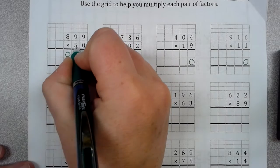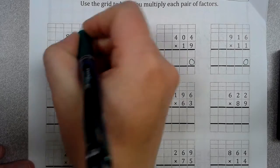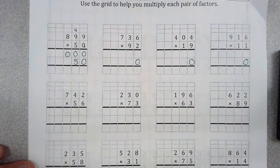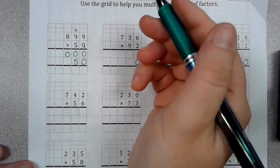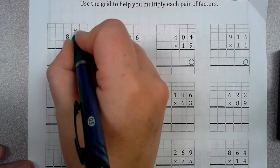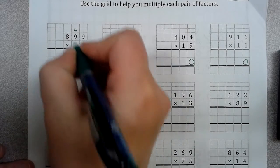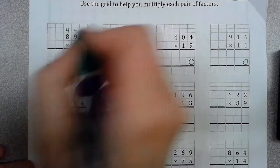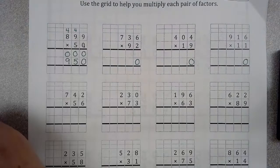So, 5 times 9 is 45. So, I'm going to put the 5 down here and kick up the 4. So, 5 times 9, once again, is 45 plus 4 is 49. 5 times 8 is 40 plus 4 is 44.